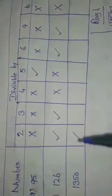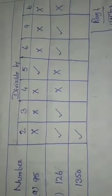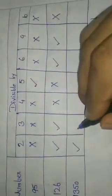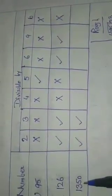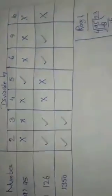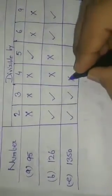Now, students, see part E. The number given is 1350. In 1350, the ones digit is 0, so that number is divisible by 2. Now check divisibility by 3: 1 + 3 + 5 + 0 = 9. Since 9 is divisible by 3, 1350 is also divisible by 3. Then, divisibility by 4: the tens number is 50. Dividing 50 by 4 — 4 goes into 50 twelve times making 48, remainder 2. So 50 is not completely divisible by 4, meaning 1350 is not divisible by 4 — put a cross.